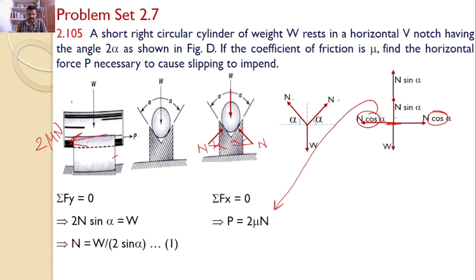And if you substitute N here, so P = 2μ, in place of N I am substituting this value W / (2 sin α) or you can say P = μW / sin α.